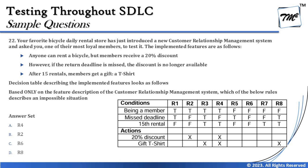R6 says all three conditions are false — not a member, never missed a deadline, not completed 15th rental. Since you're not a member, no 20% discount, and the t-shirt gift is only for members, so R6 has no actions performed — that's perfectly practical. R8 says: not a member (false), missed deadlines (true), and completed 15th rental (true). This is contradictory — if you're not a member, how can you get a t-shirt? That seems impractical.